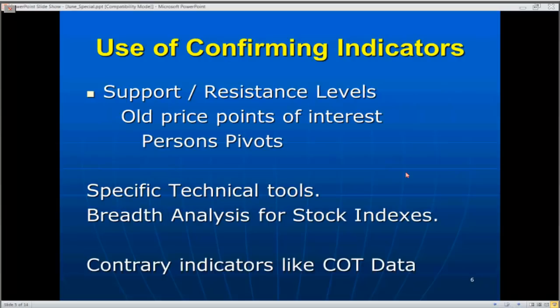Some confirming indicators I like to teach are support and resistance levels, old price points of interest, and my favorite tool, Persons Pivots. I also like breadth analysis for stock indexes — the advance-decline comparative ratio lines for all individual stock indices. We also like to use contrary indicators like commitment of traders data. Thinkorswim does not yet have the COT data, so don't email JJ asking when it's coming. There is a way to get that information for free, and I'll show you tonight.